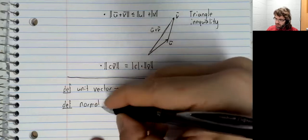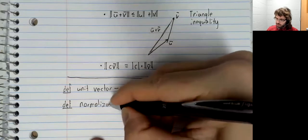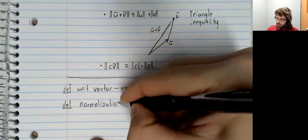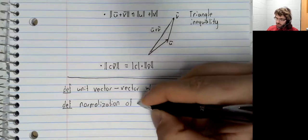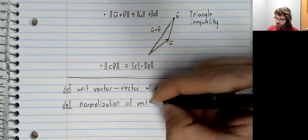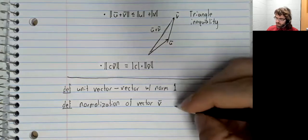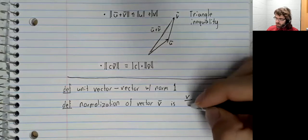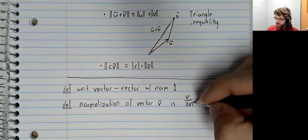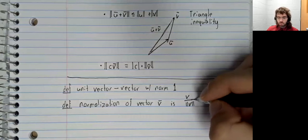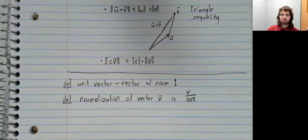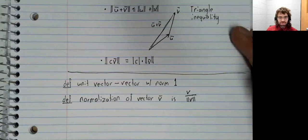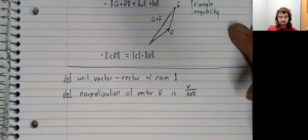The normalization of a vector v is the vector divided by its norm, or scaled by one divided by the norm, if you want to say that a little more technically.